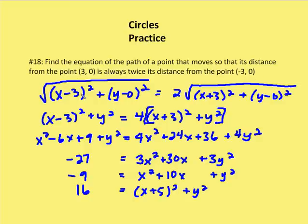Squaring both sides removes the radicals: x minus 3 squared plus y squared equals 4 times x plus 3 squared plus y squared. Expanding: x squared minus 6x plus 9 plus y squared equals 4x squared plus 24x plus 36 plus 4y squared. Simplifying further gives negative 27 equals 3x squared plus 30x plus 3y squared.